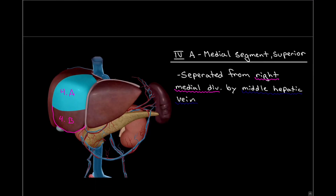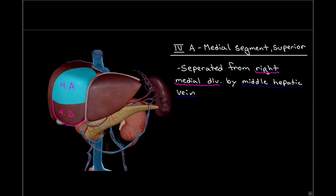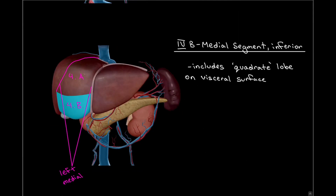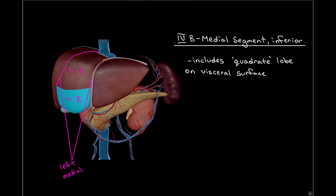Moving on to an anterior view of the liver, we can see segments number four A and four B, which are part of the left medial division. That middle hepatic vein is making this division of the liver, and segments four A and four B drain their blood into the middle hepatic vein.